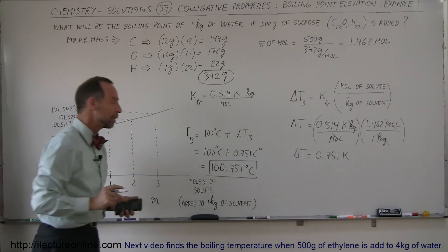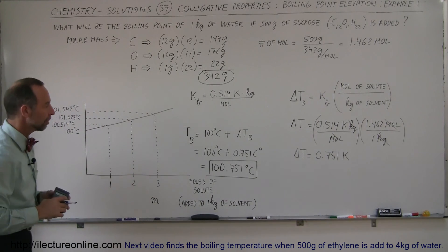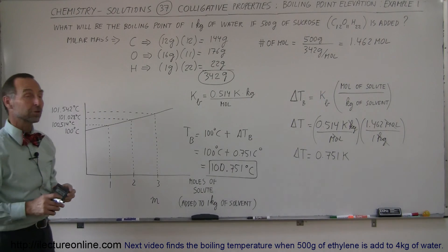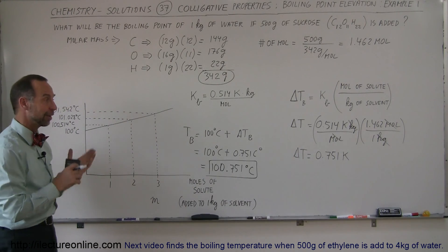And that would be about 3 quarters of a degree increase in boiling temperature because we added about a mole and a half of sugar to a kilogram of water. And that's how you figure it out.